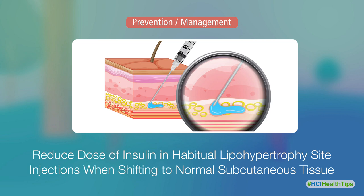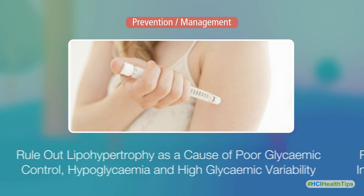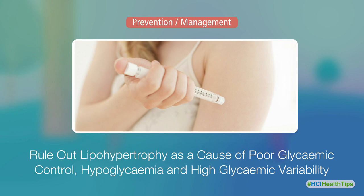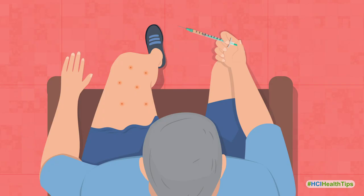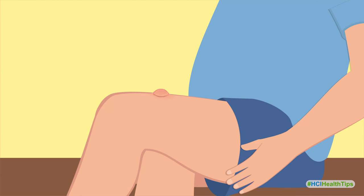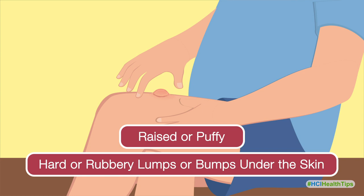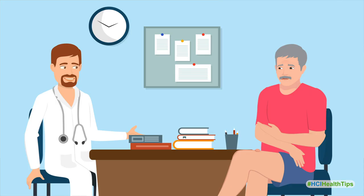Further advice includes: reduce the dose of insulin in habitual lipohypertrophy site injections when shifting to normal subcutaneous tissue, rule out lipohypertrophy as a cause of poor glycemic control, hyperglycemia, and high glycemic variability. Inspect injection sites on your own — look for areas that appear raised or puffy, feel for hard or rubbery lumps or bumps under your skin, and make sure to report any findings to your physician.